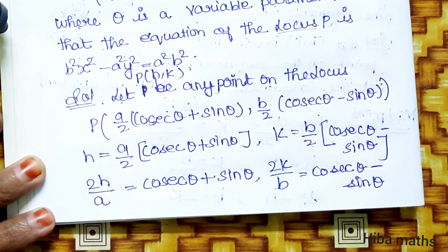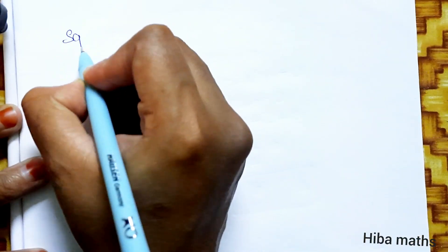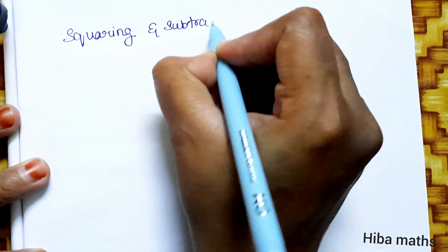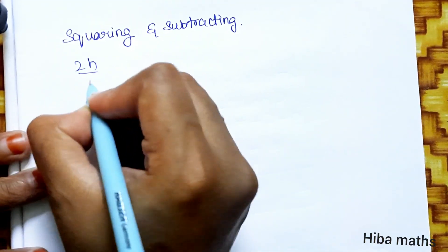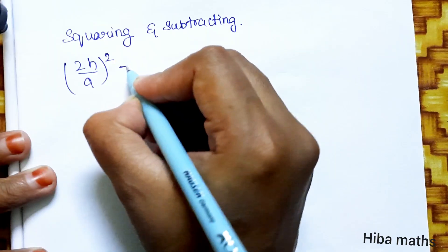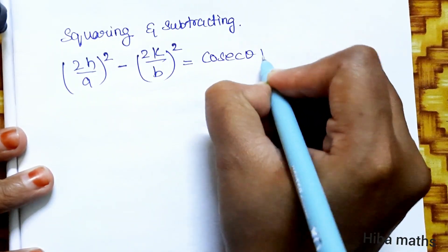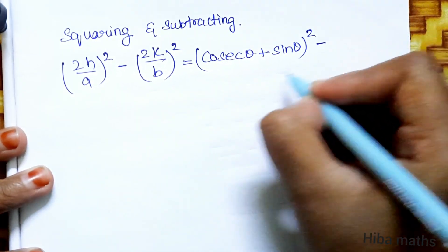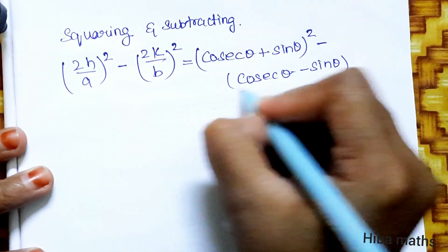Squaring and subtracting: (2h/a)² - (2k/b)² equals (cosθ + sinθ)² - (cosθ - sinθ)². Using the (a+b)² and (a-b)² format, the left side gives 4h²/a² - 4k²/b².